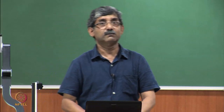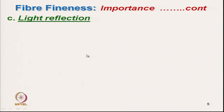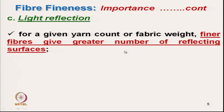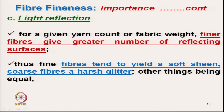If given two fibres with all other parameters the same, we must always select the fibre with lower diameter for spinning, as its spinnability is much better. Light reflectance also changes with fibre diameter. For a given yarn count and fabric weight, finer fibre gives a greater number of reflecting surfaces because finer fibre has higher specific surface area. Finer fibre tends to yield soft, gentle lustre.